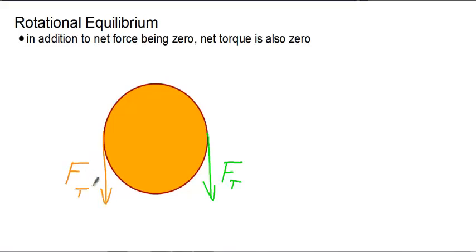If it is at rest, then FT over here, the green one, and FT over here, the orange one, would be equal and opposite.